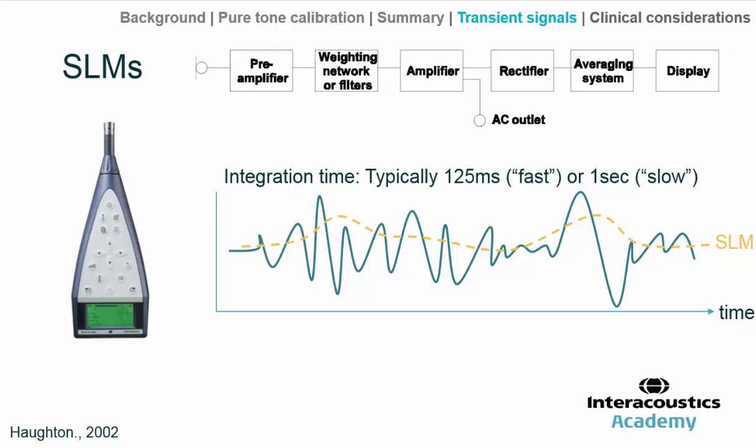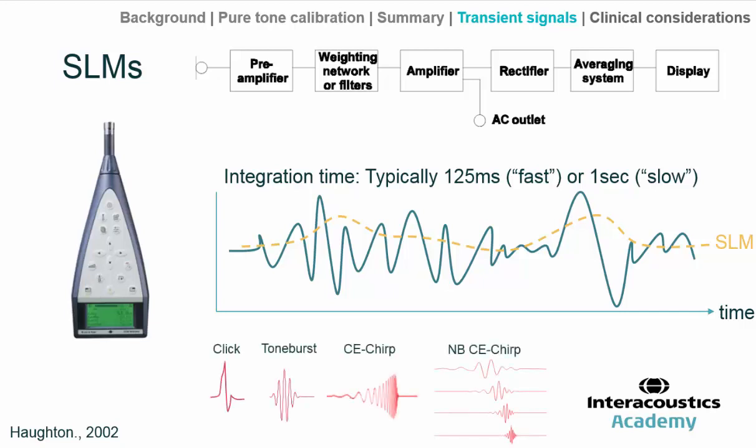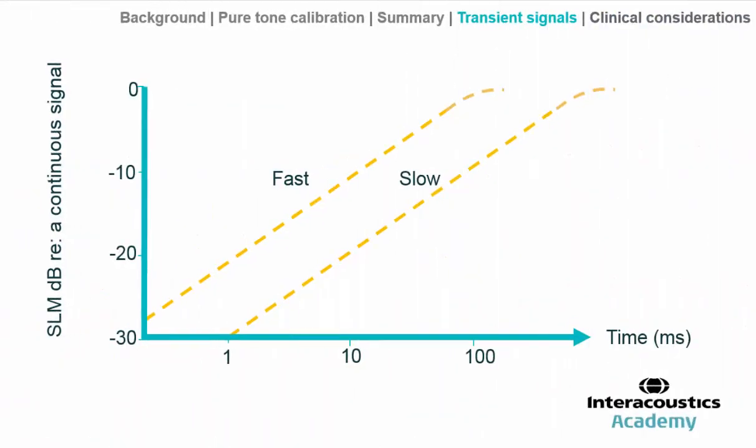For example, clicks, tone bursts, and chirps of various types that are commonly used — if the signal is much shorter than the integration time, the sound level meter will likely underestimate the true level of that signal. On the chart shown, the x-axis shows the duration of the signal and the y-axis shows the degree of underestimation relative to a continuous signal. As the stimulus gets shorter, or as the integration time is more and more unfilled, the underestimation of the level gets greater and greater.